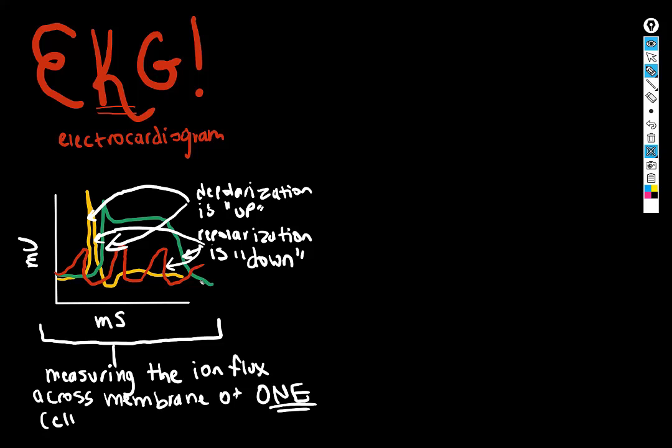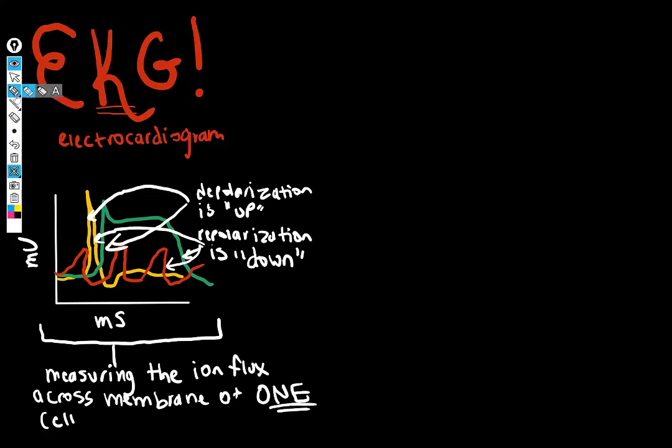But that's only true if you're paying attention to the electrical activity of one cell at a time. And that's not what an EKG does. What an EKG does is measures the ion flux and electrical changes across the entire heart. And also from multiple angles. So I'll explain what I mean. So here we have an anatomically incorrect heart.